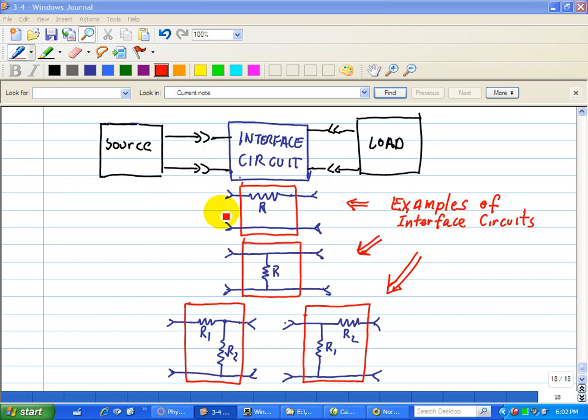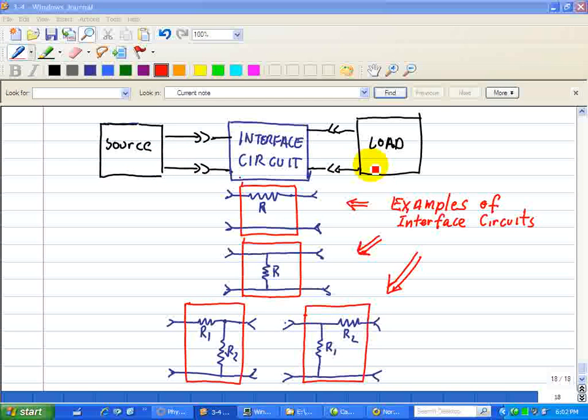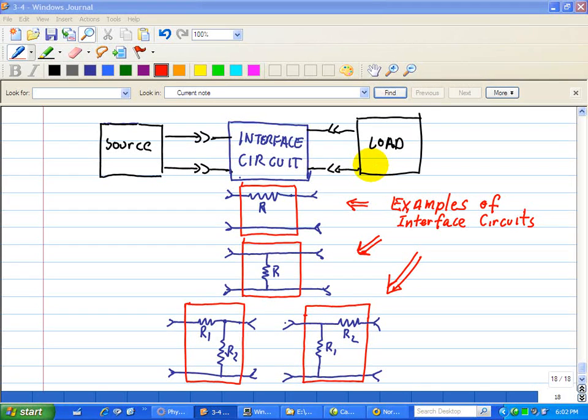Hence, this is a two-port network. The port connected to the source is the input, and the port connected to the load is called the output. The purpose of this two-port network is to make certain that the source and load interact in the proper way.